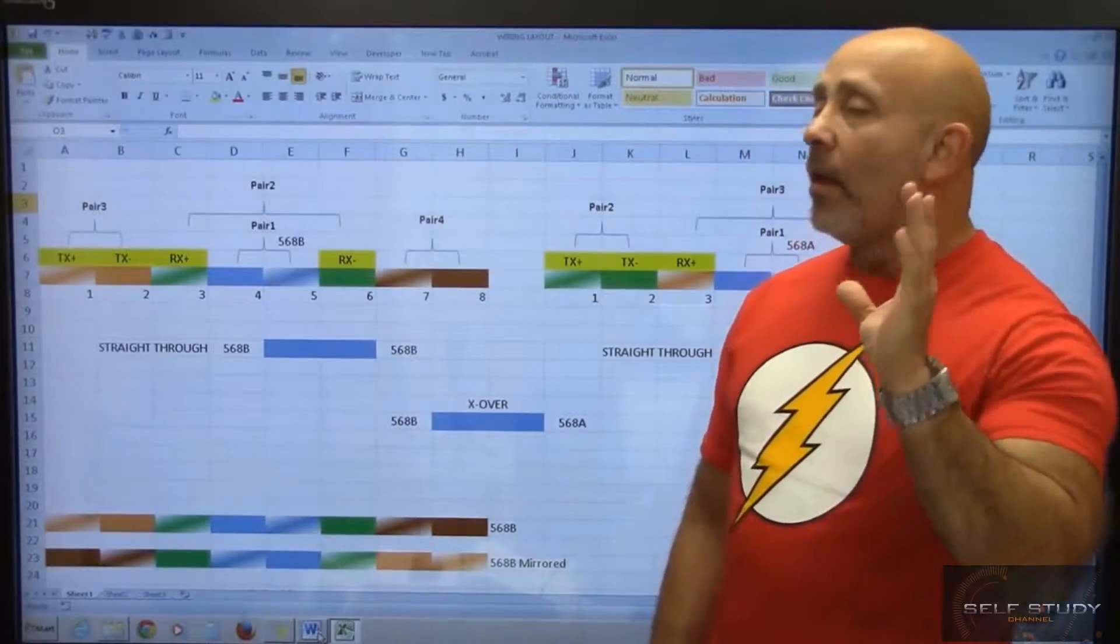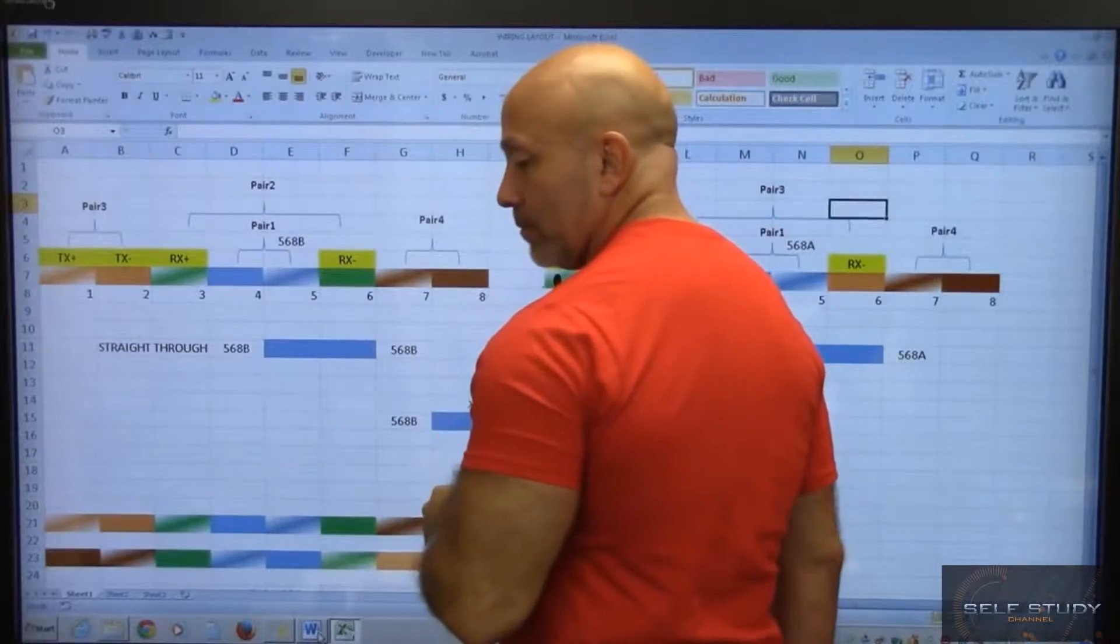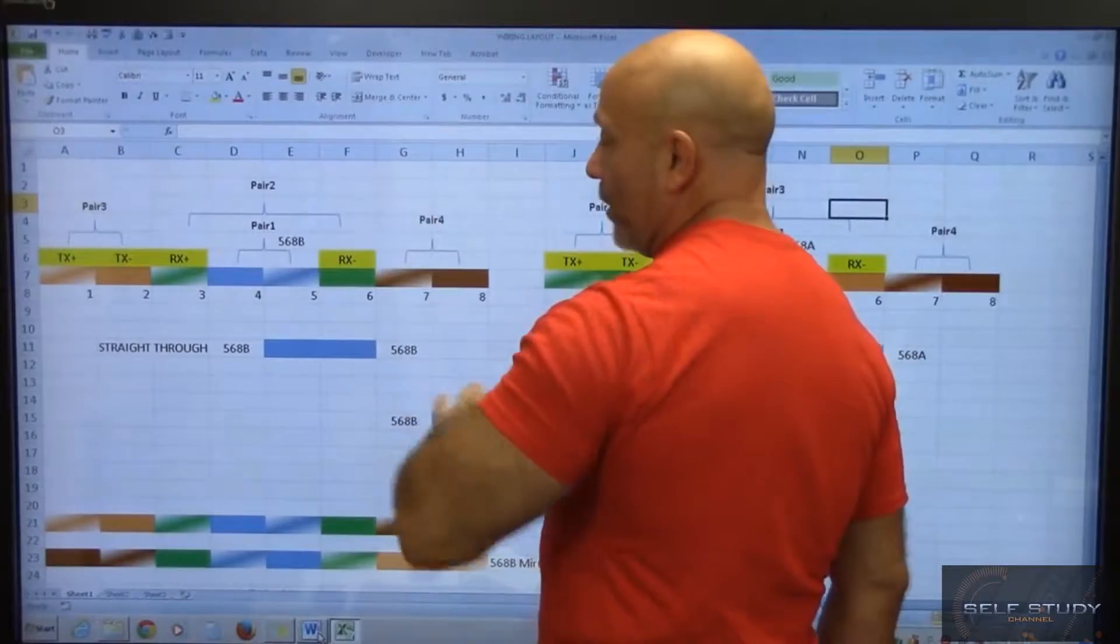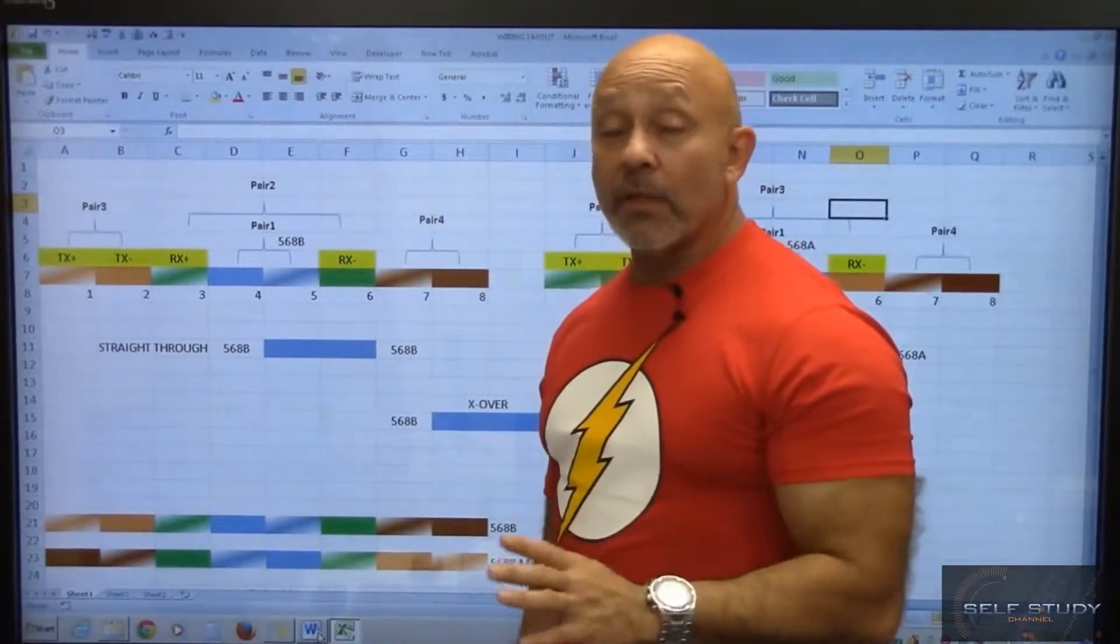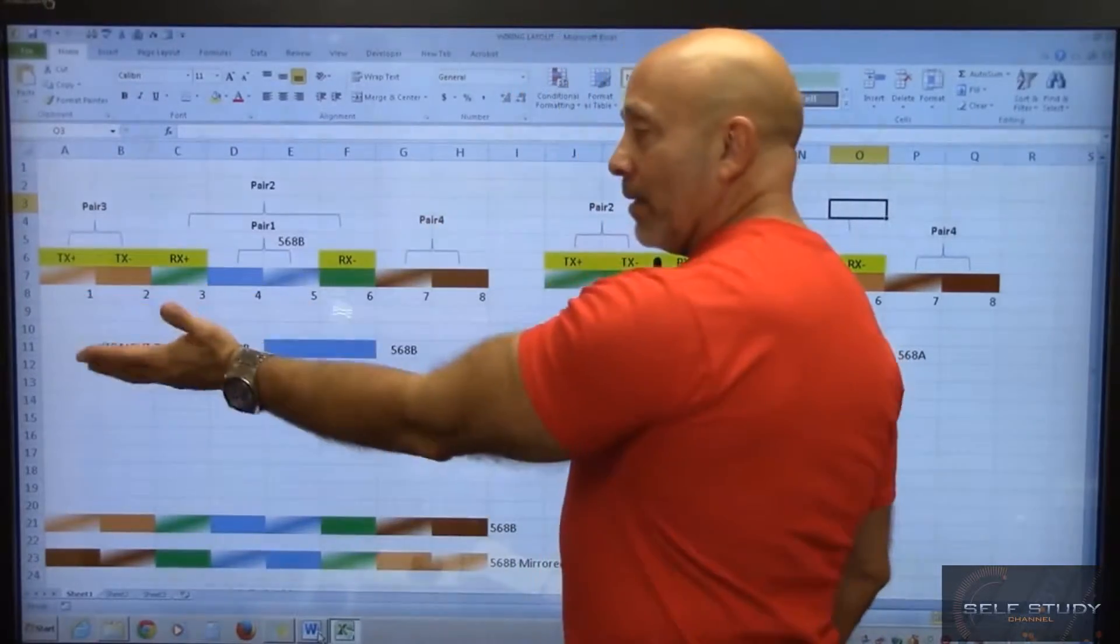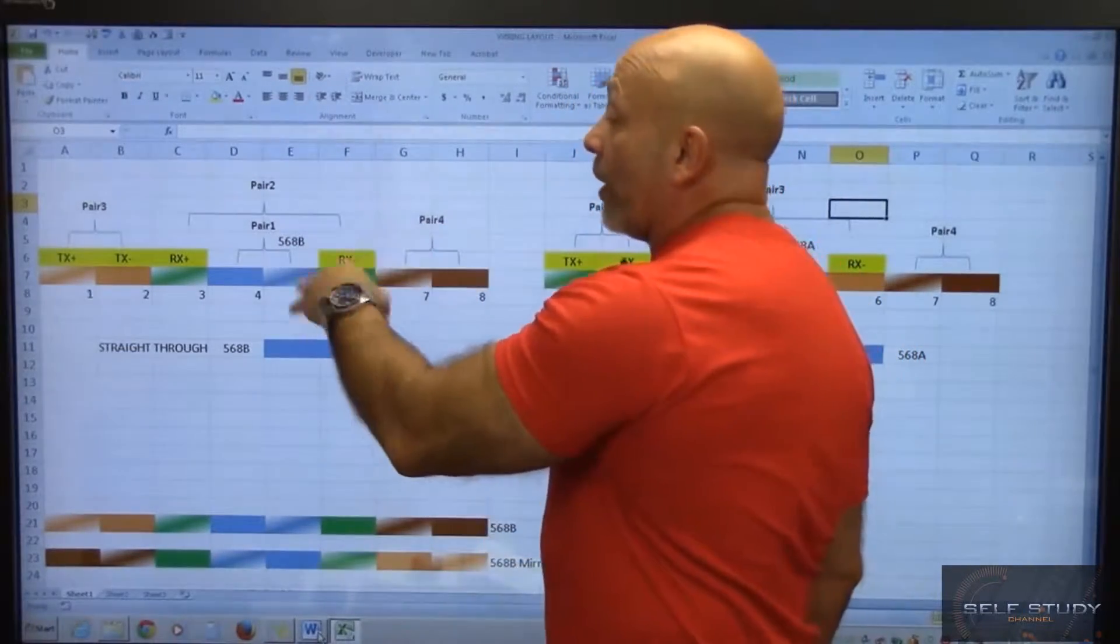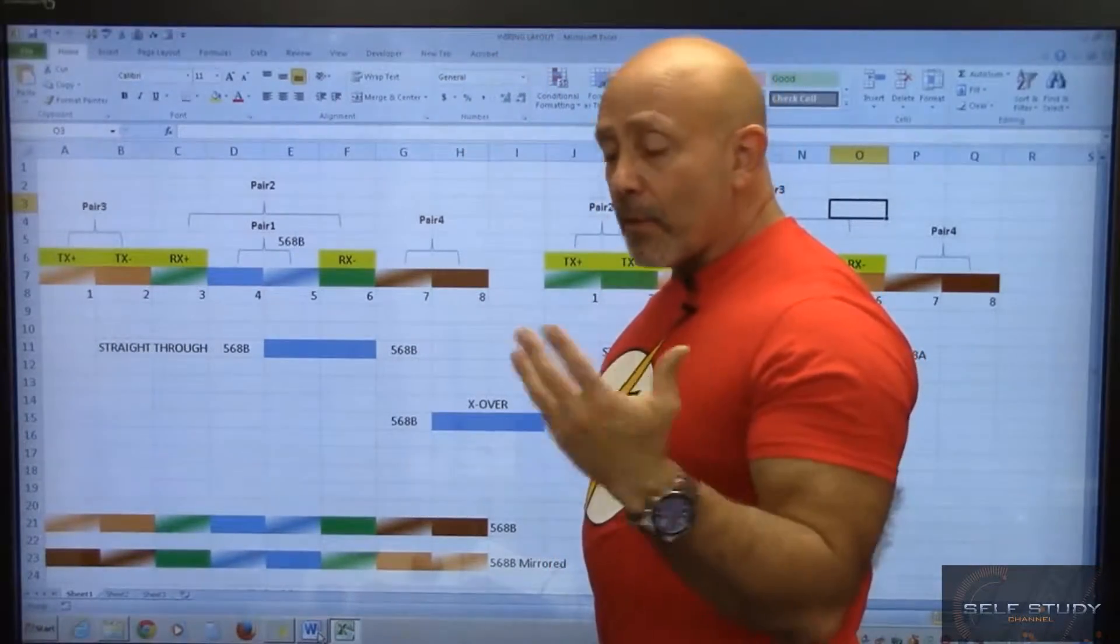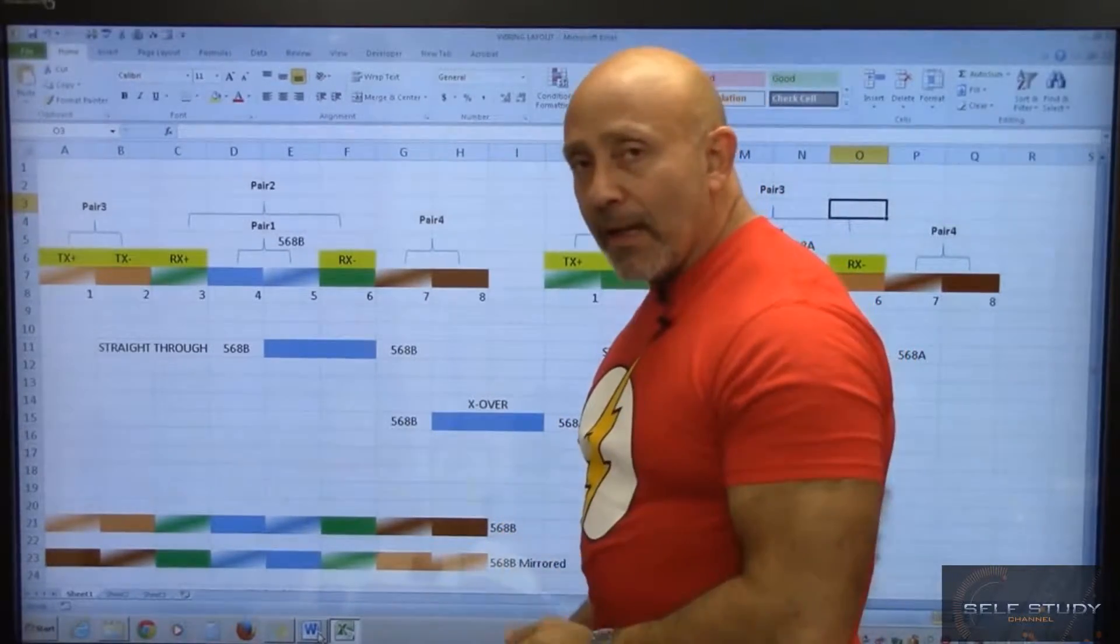The book teaches you from left to right you have orange white, orange, green white, blue, blue white, green, brown white, brown. I didn't learn that way. By now the majority of you know me and you know I'm just not the same as everybody else. I learned it the other way. I learned brown, brown white, green, blue white, blue, green white, orange, orange white, and there's a reason for that. Somebody came to me a long time ago and said hey, that makes sense. I'm going to keep that, I like that, I'm going to use that.